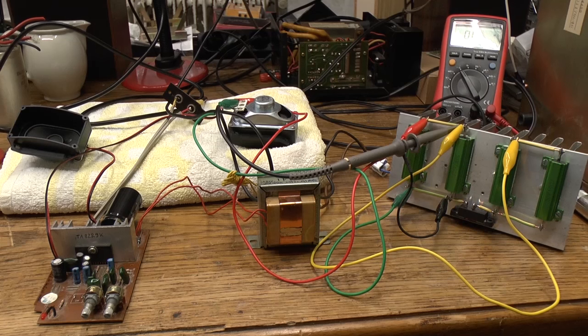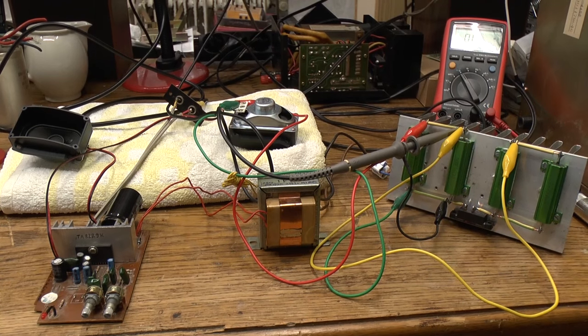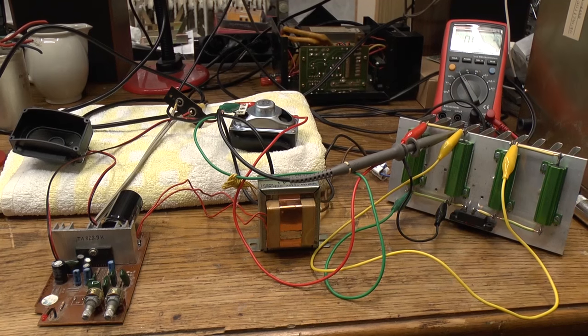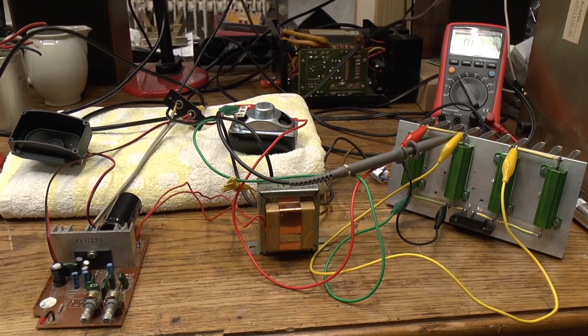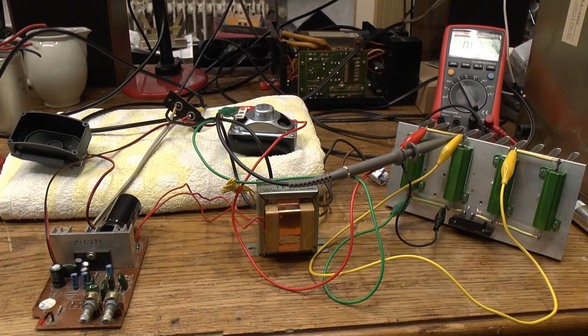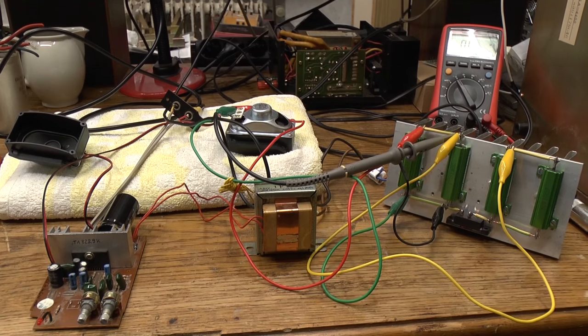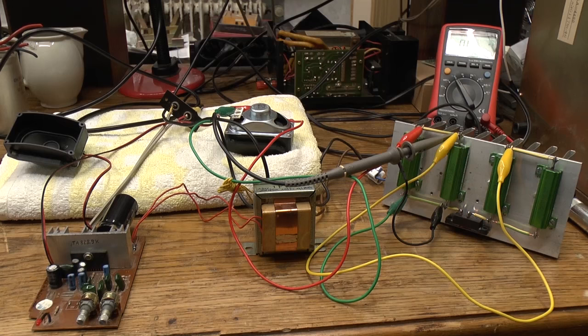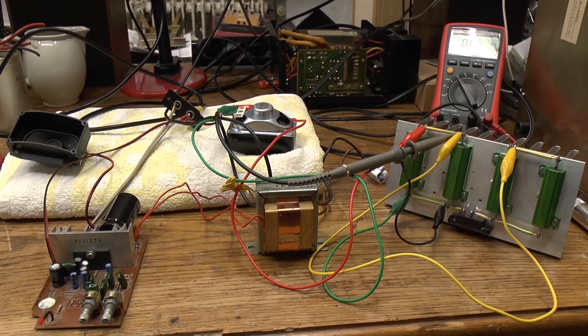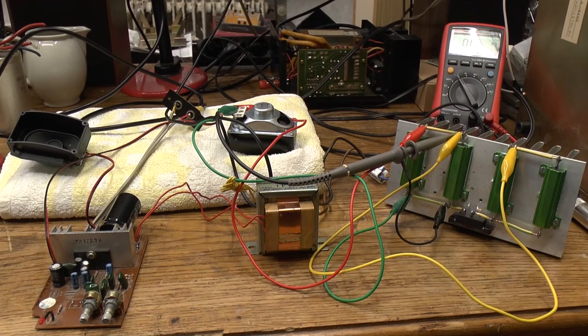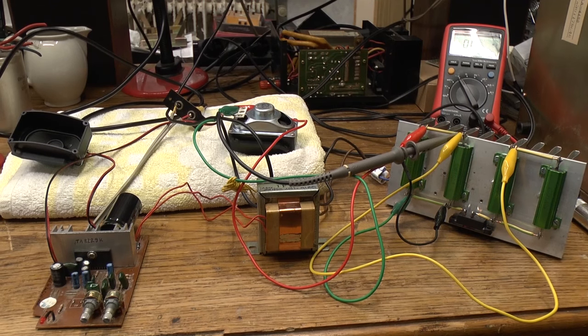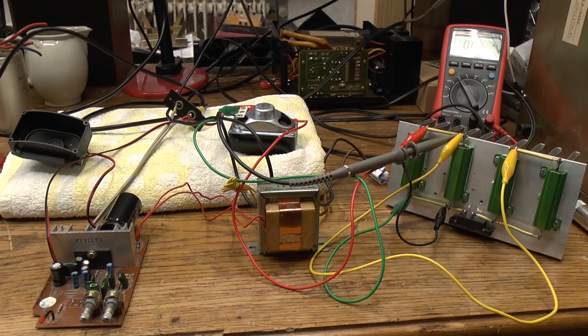So what do we learn from this video? By installing a higher capacity filter capacitor in your power supply, you can raise the impulse output power of your amplifier, but you cannot raise the RMS continuous output power of that amplifier.